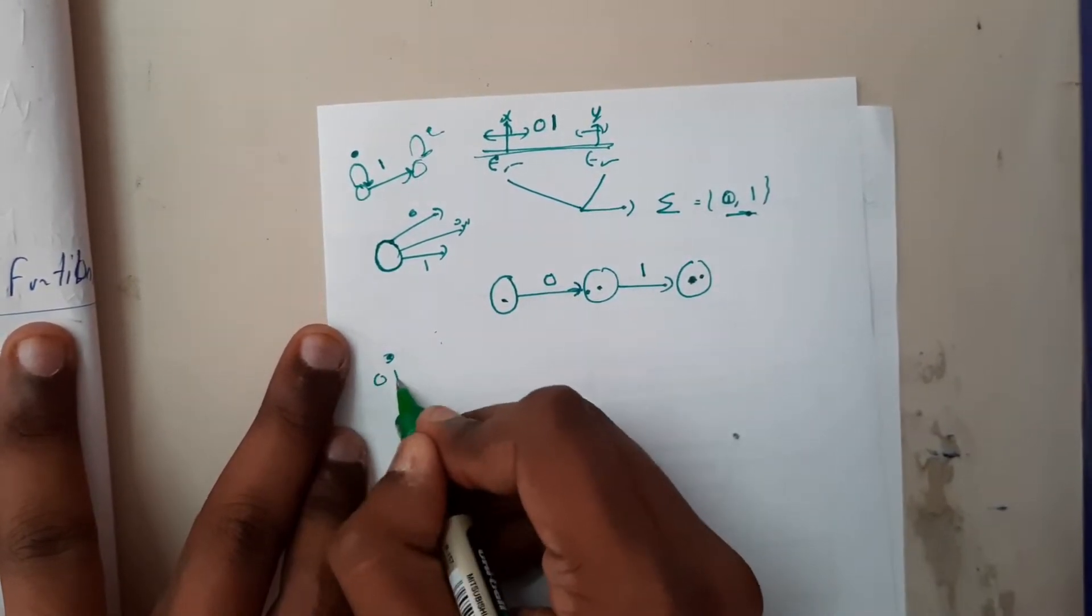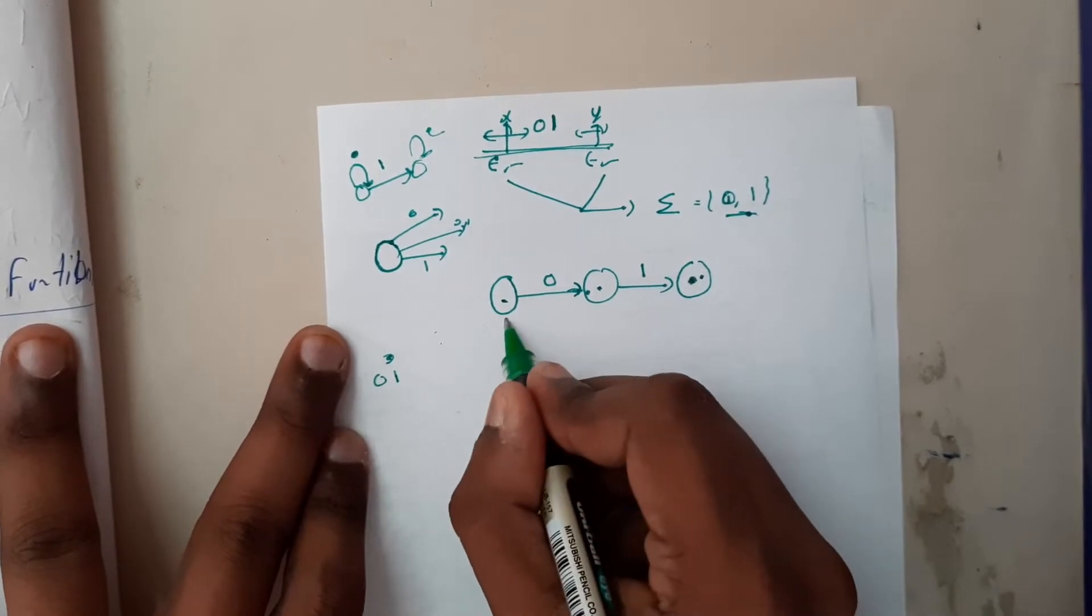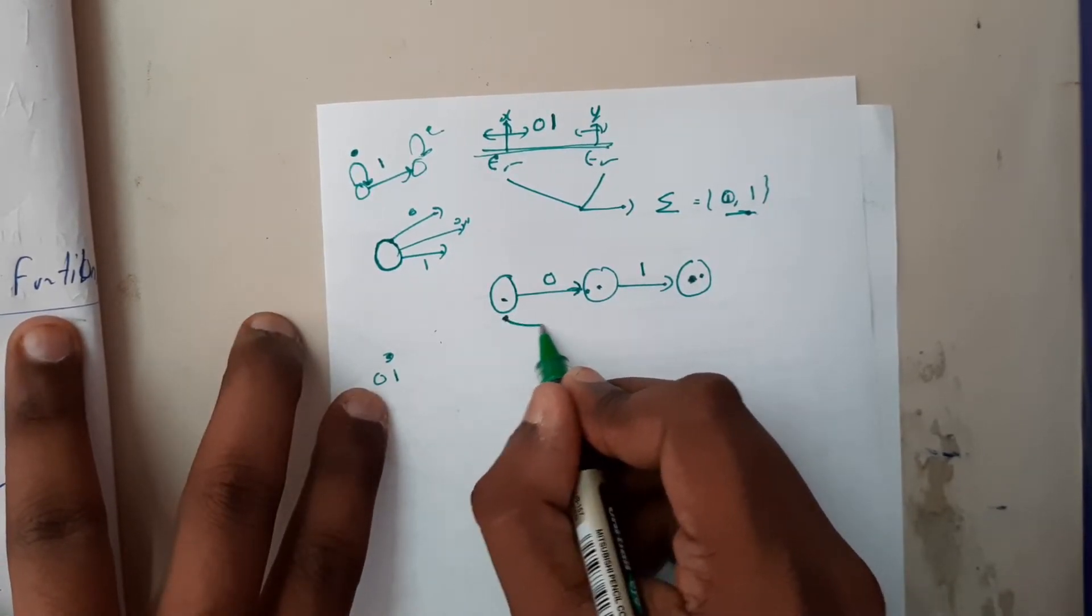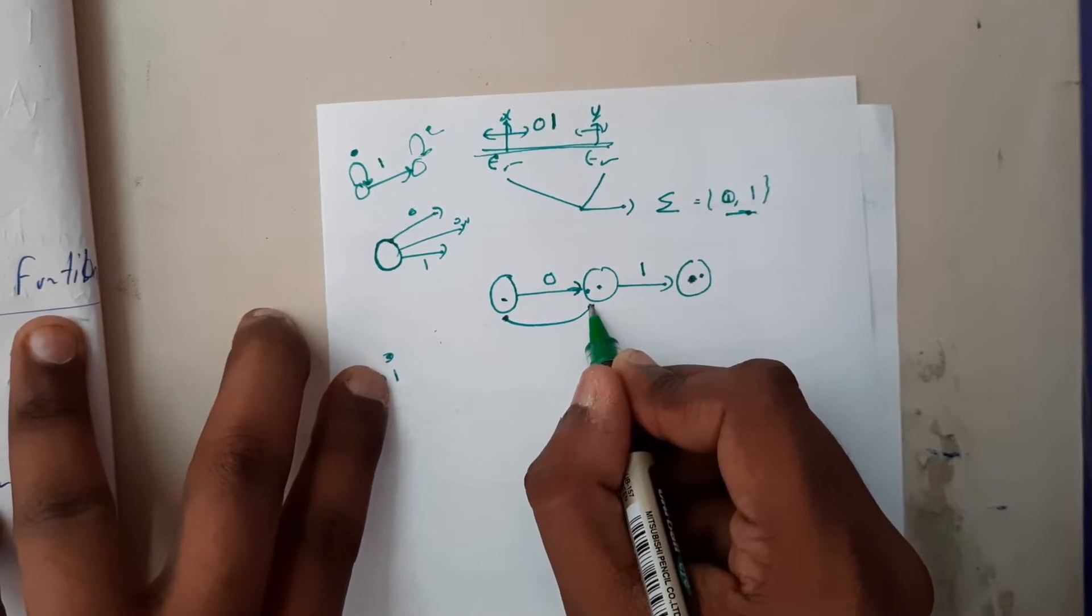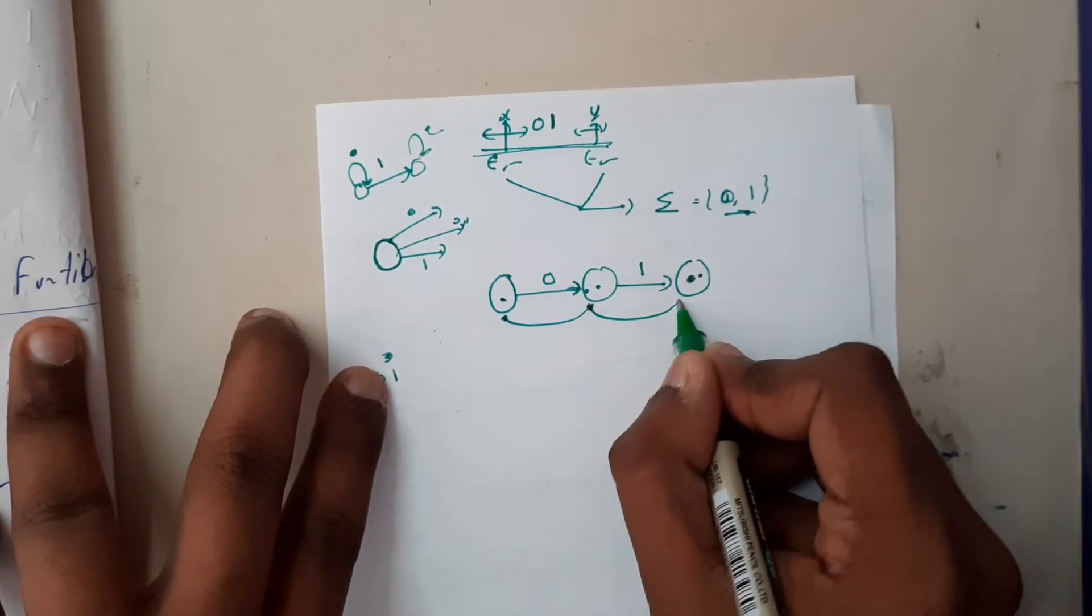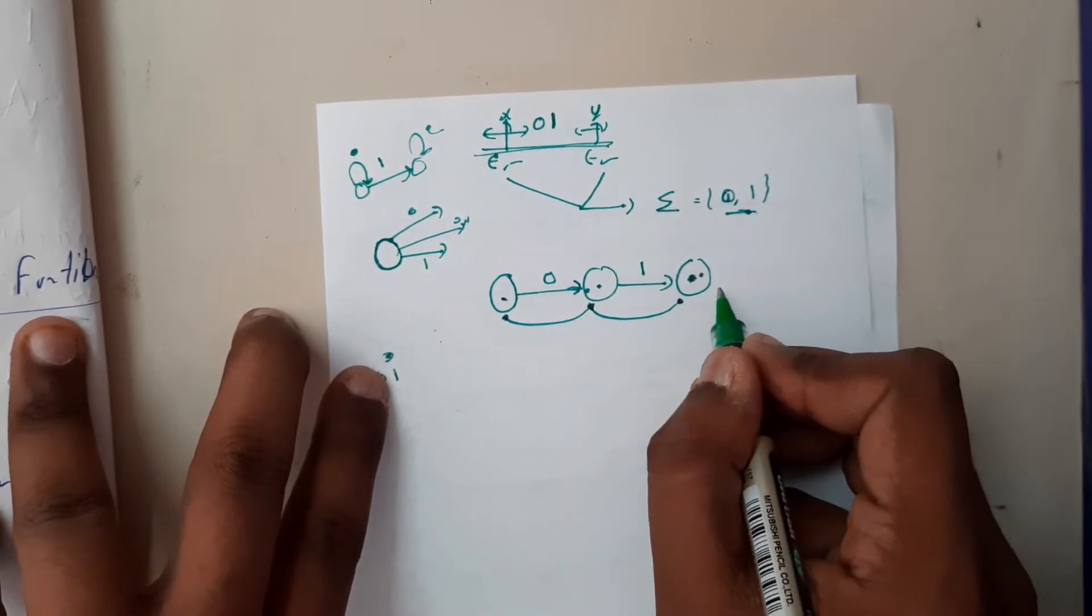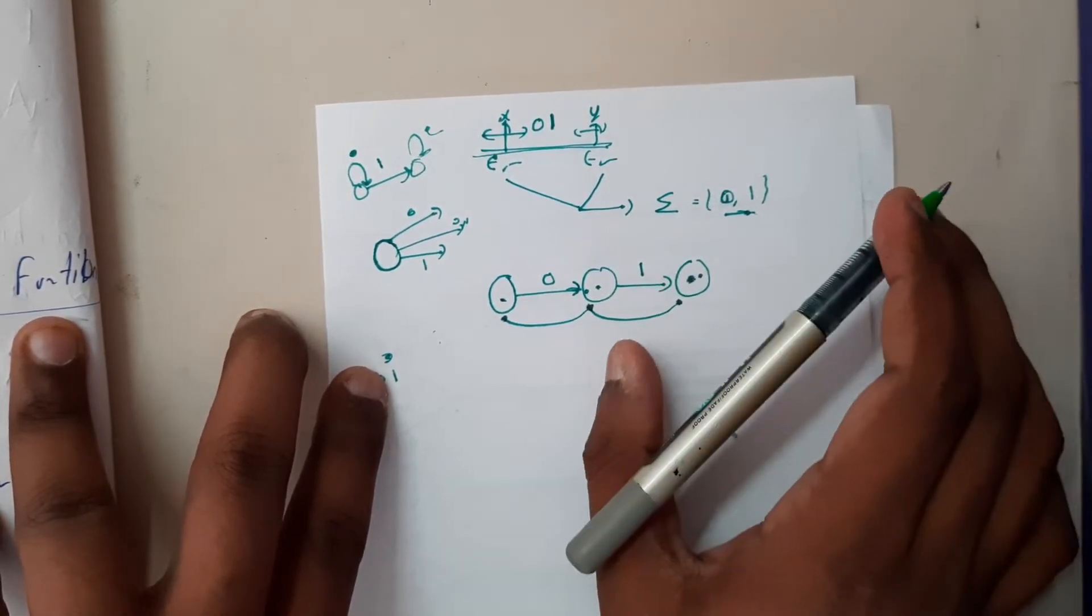Now we are done with zero one. If you give any string with zero one in it, it will be traveling like this. Let us assume I gave zero one as input only, so we started here. On seeing zero we'll be moving here, now zero is done. After that you've seen one, so from one you'll be going here.